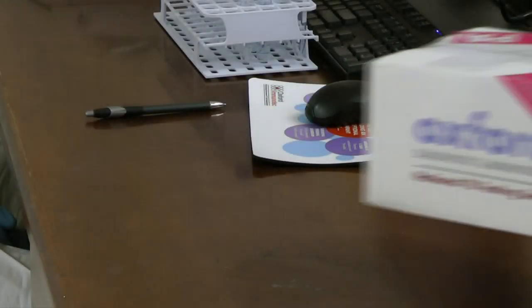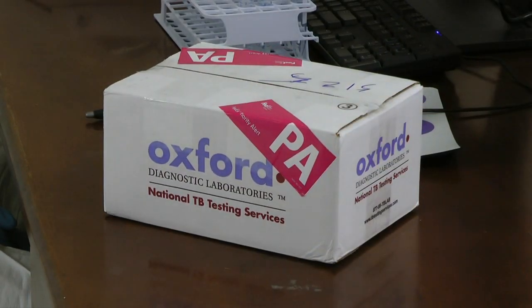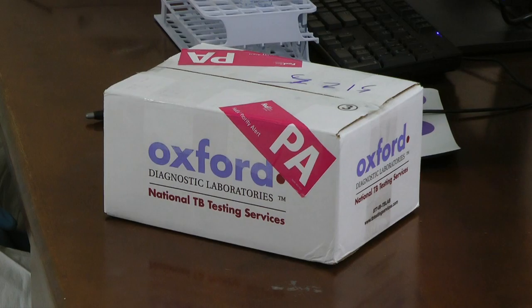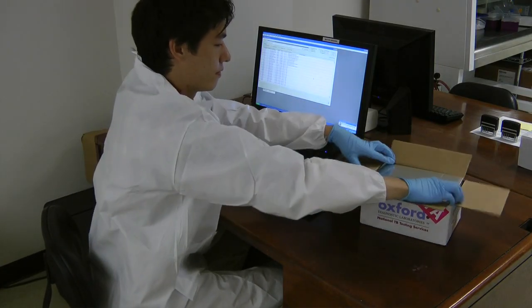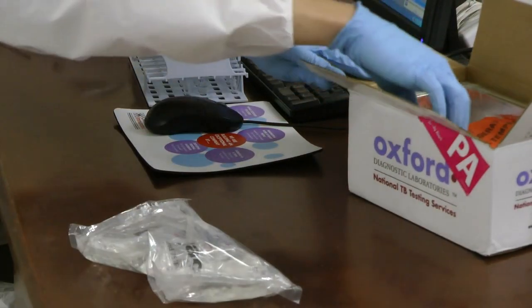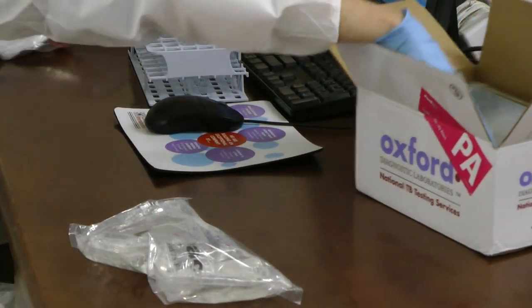Whole blood samples are submitted to Oxford Diagnostic Laboratories in customized shipping containers which ensure samples are maintained at room temperature throughout storage and transit. Upon receipt, the boxes are opened and the contents are removed.